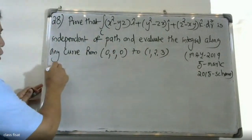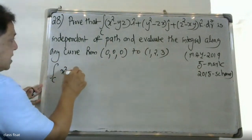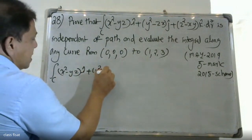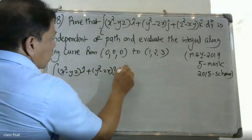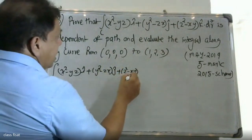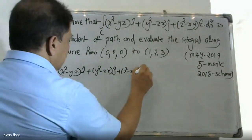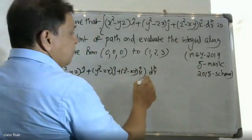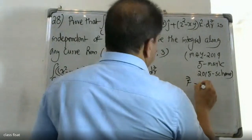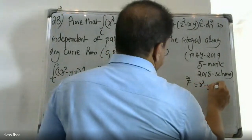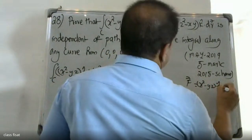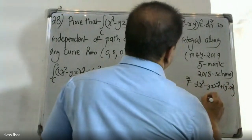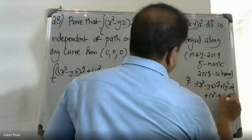The vector field F is given as (x² - yz)i + (y² - zx)j + (z² - xy)k.